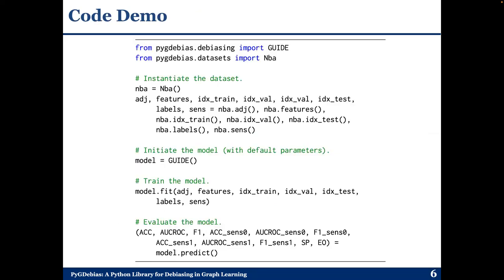This presents a very simplified code demo, which shows a very user-friendly pipeline of using this Python library to perform debiasing-related research in the area of graph machine learning.